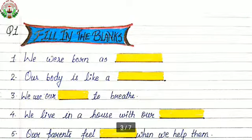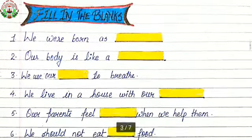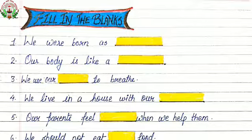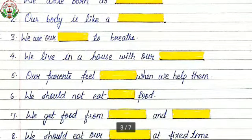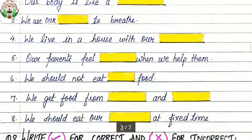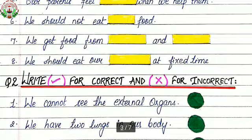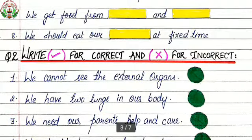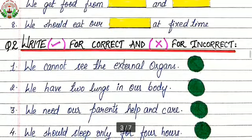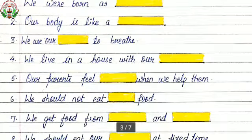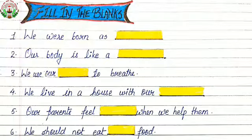Now we start our questions. Question number one, fill in the blanks. First, we were born as blank. Second, our body is like a blank. Third, we use our blank to breathe. Fourth, we live in a house with our blank. Fifth, our parents feel blank when we help them. Sixth, we should not eat blank food. Seventh, we get food from blank and blank. Eighth, we should eat our blank at a fixed time. You have to write these in your environmental studies copy along with the answers.